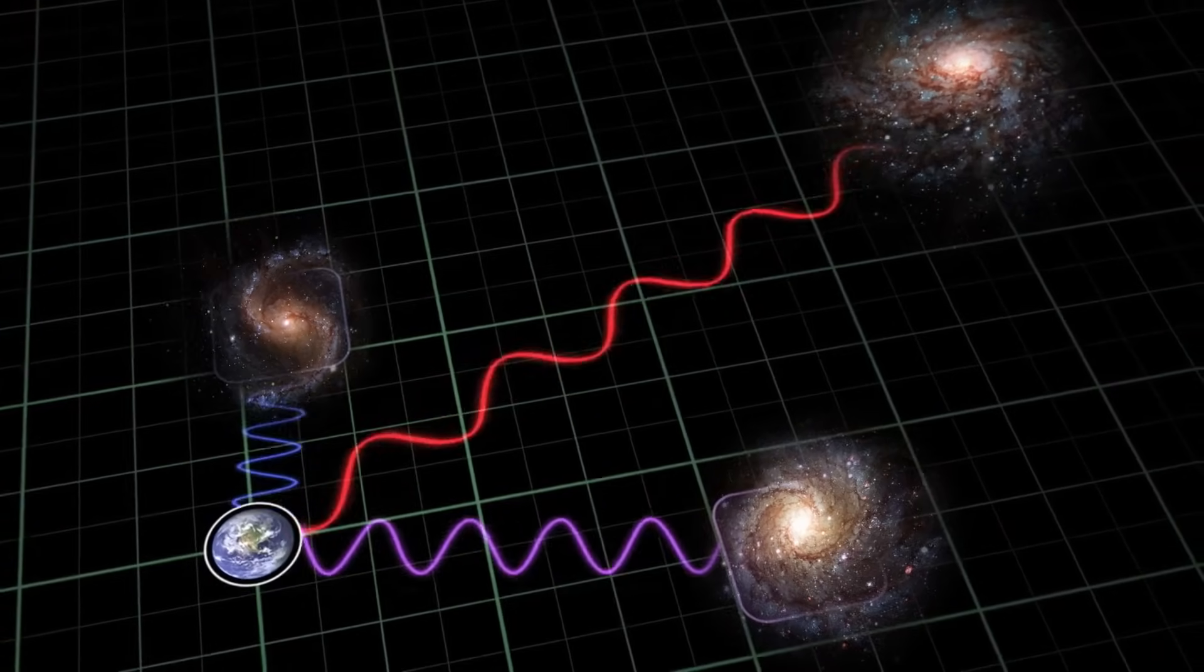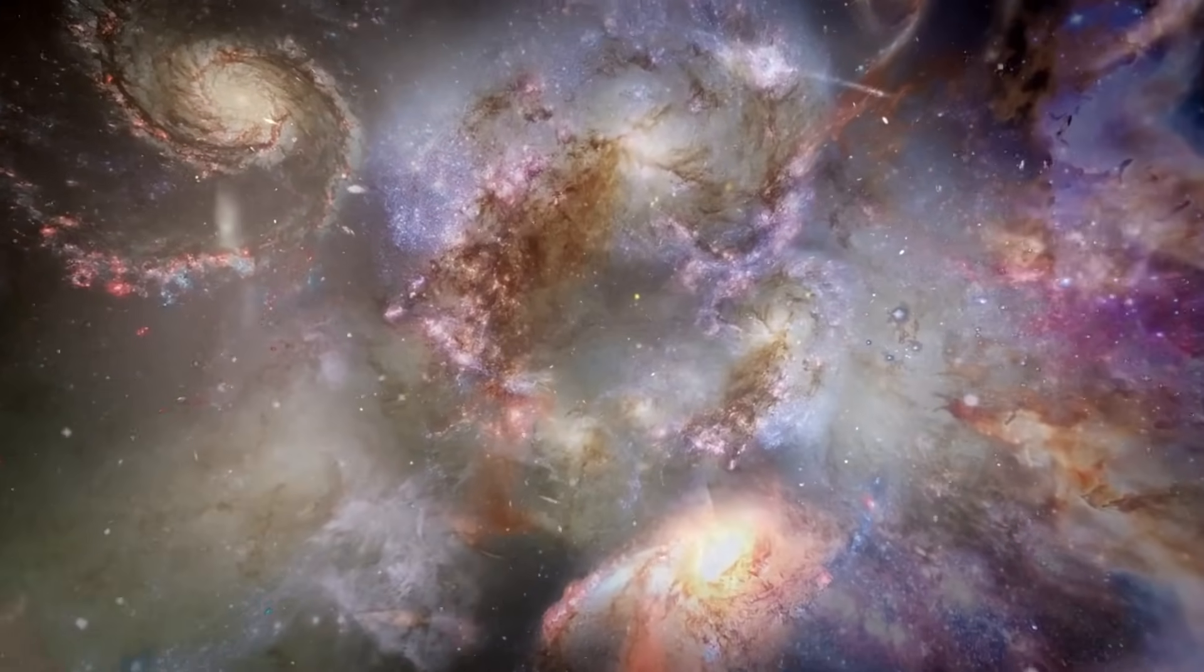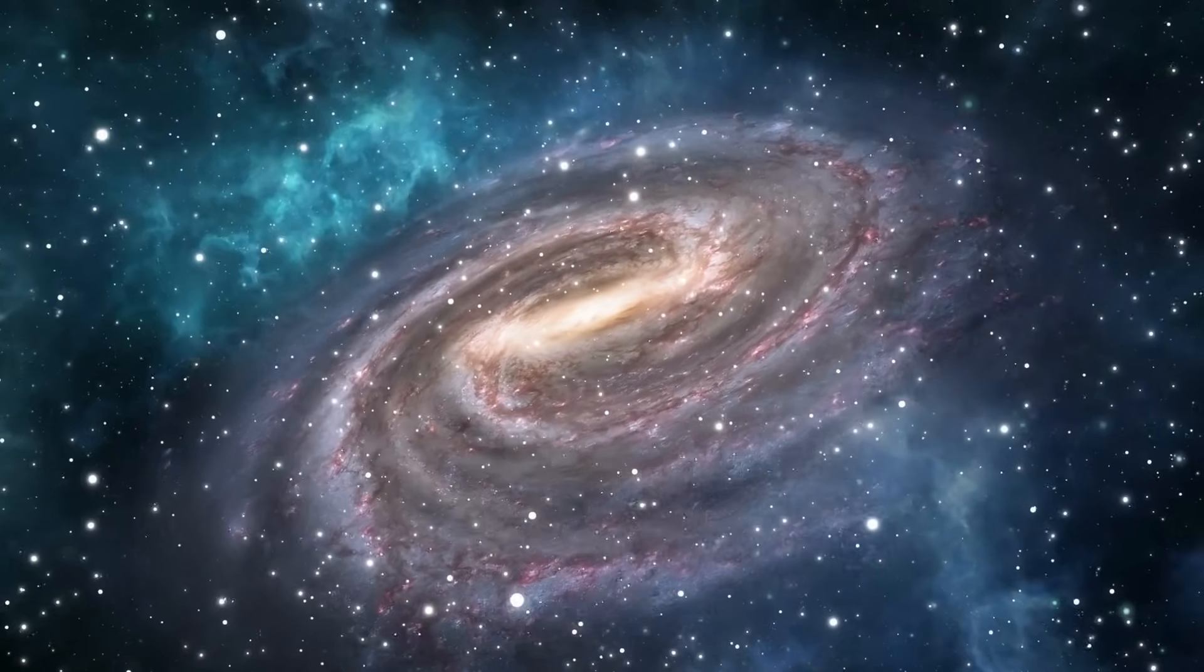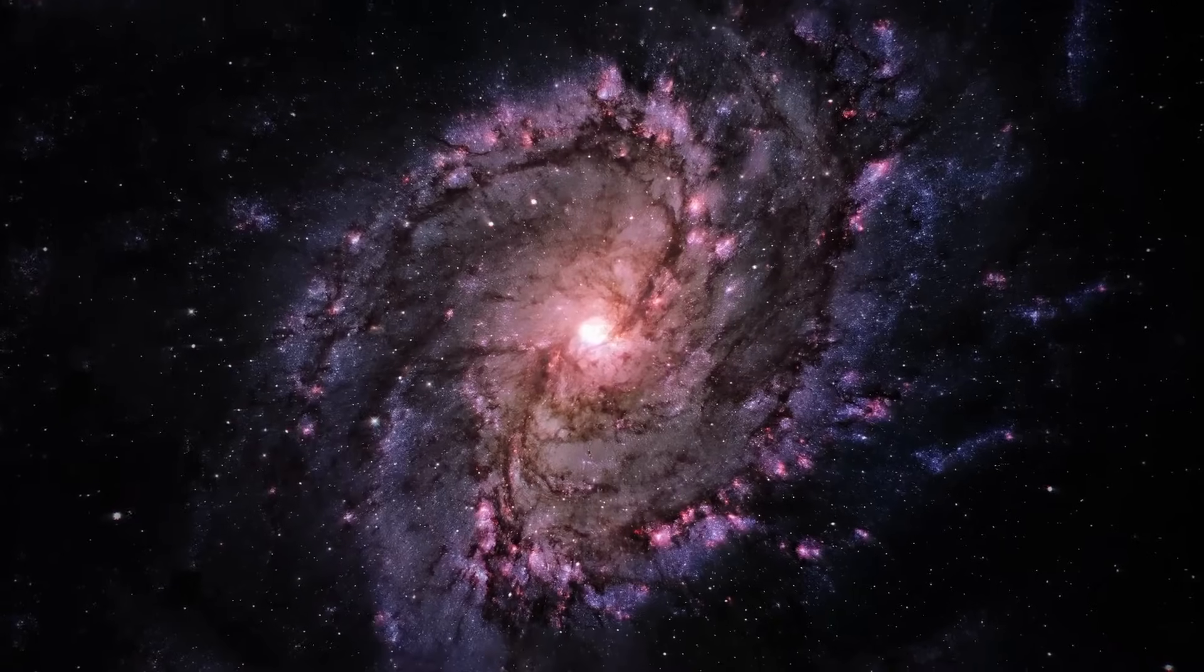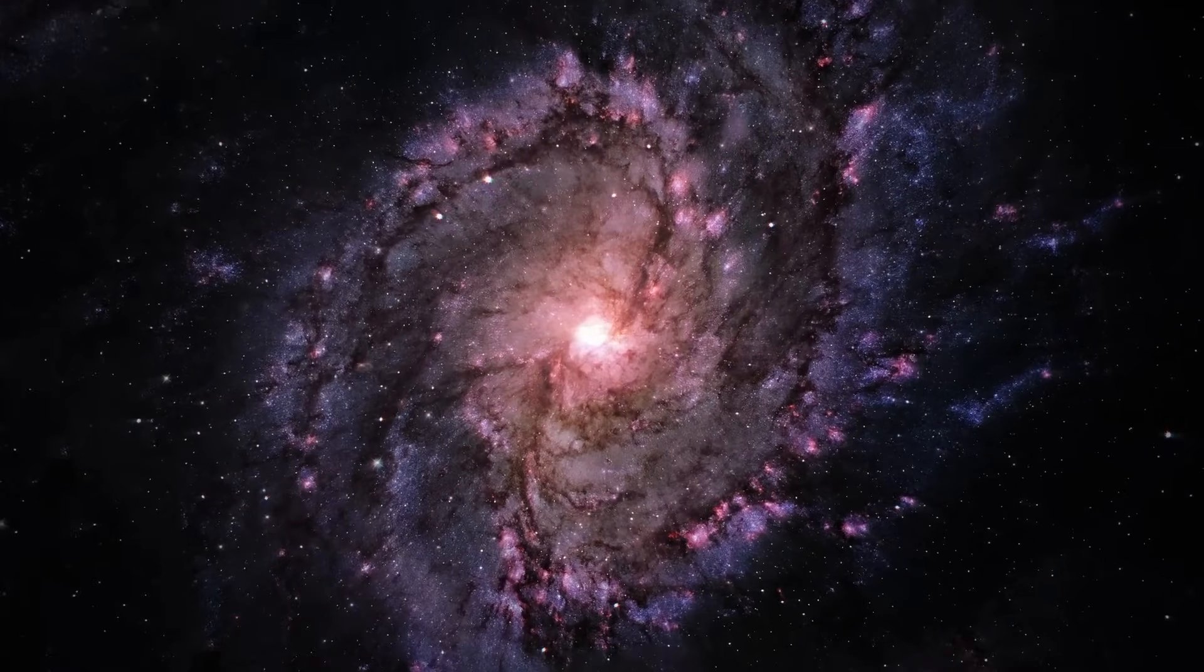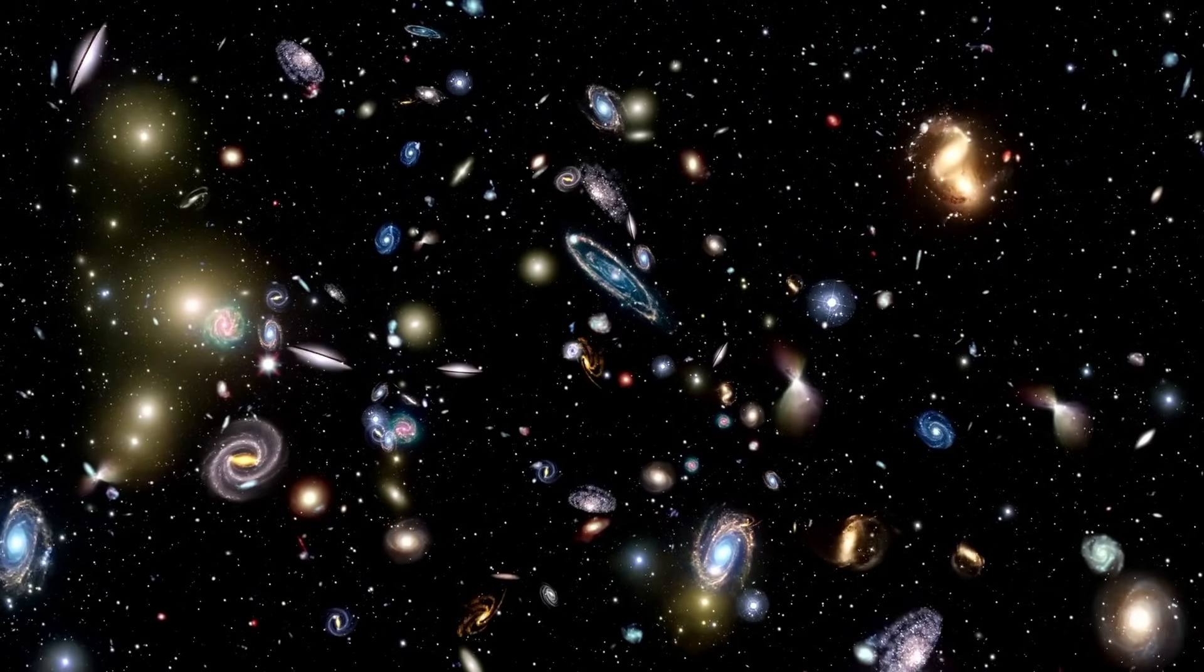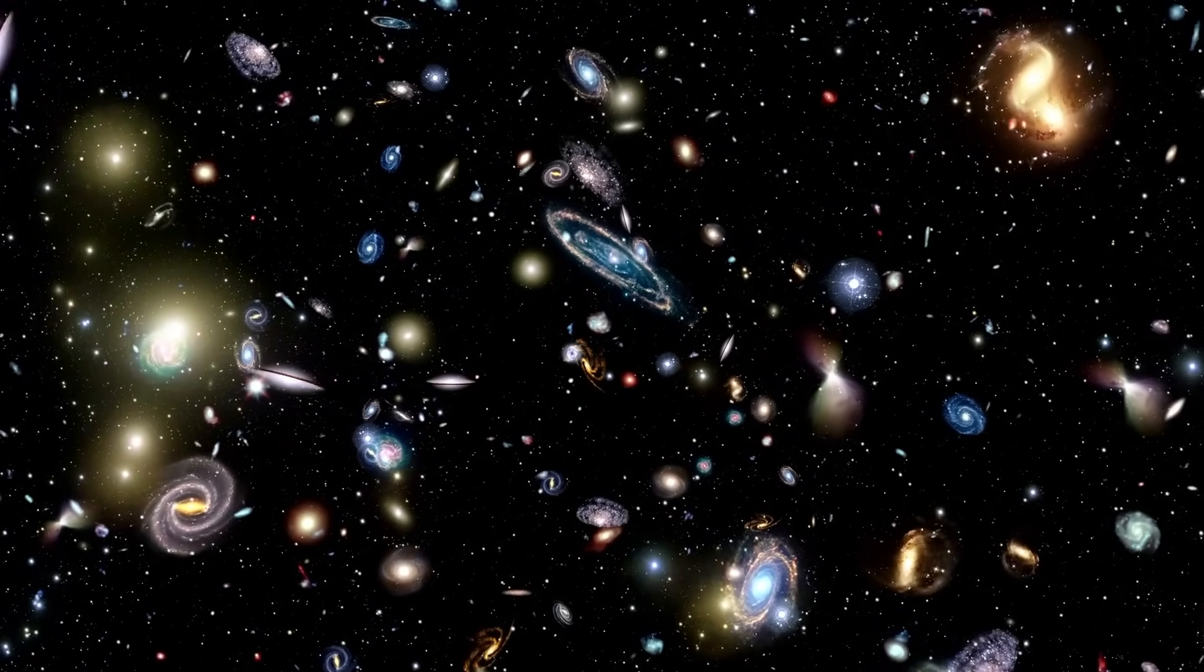These findings are in contrast with what we see in the nearby universe, where most galaxies have spiral or elliptical structures and are round or oval in shape. How can we explain this difference? And what does it tell us about the evolution of galaxies? Let's explore these questions in the next section.